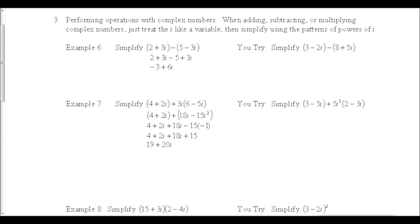All of the examples we just did had square roots of negatives, which gave them i's. However, a lot of times when performing operations with complex numbers, we'll have i's but no radical or square root symbol. We're going to look at adding, subtracting, and multiplying complex numbers, treating i just like any other variable such as x. In the end, we simplify using the patterns in the powers of i from the front of the notes — never leave i to an exponent.